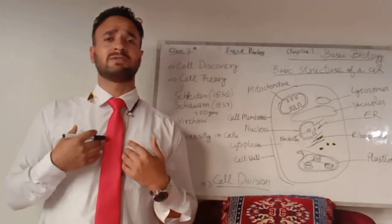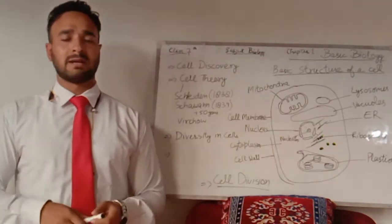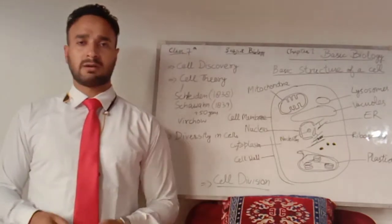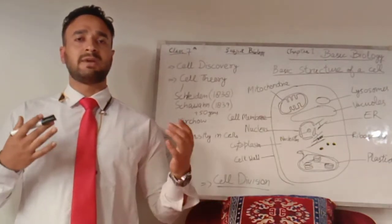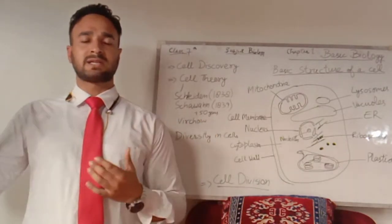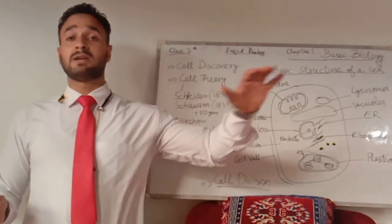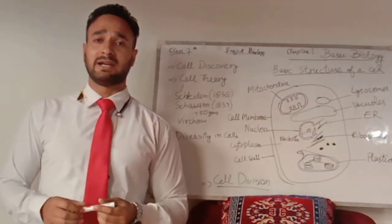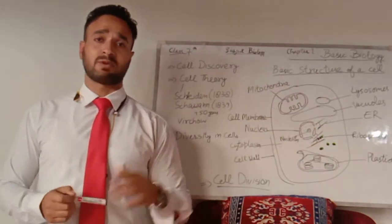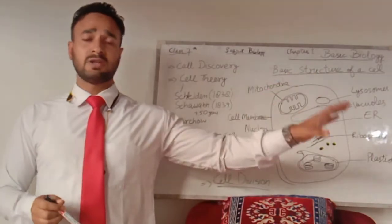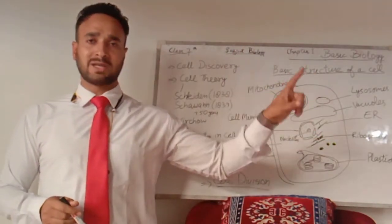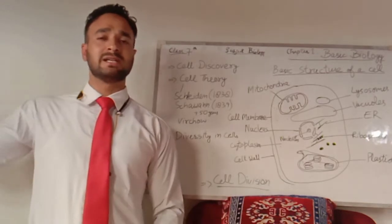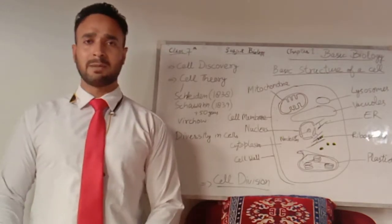We human beings and other large birds and mammals are multicellular organisms, meaning our body is made up of millions and billions of cells, which is not the case for bacteria, which are unicellular organisms made up of only one cell.